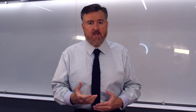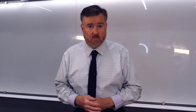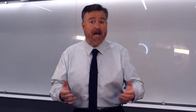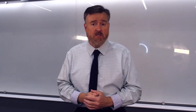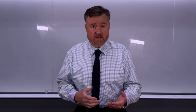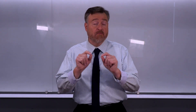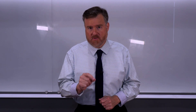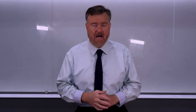We are going to create frequency distributions. Let's unpack what that means. Frequency is a calculation of how often a score occurs in a distribution, and a distribution is a general name for any organized set of data. Therefore, a frequency distribution is an organized set of frequencies telling us how often particular scores occur in our data set.